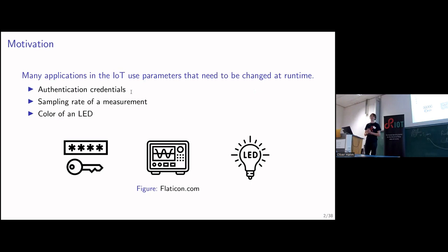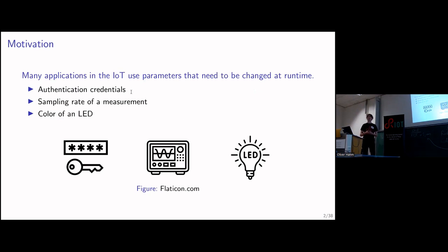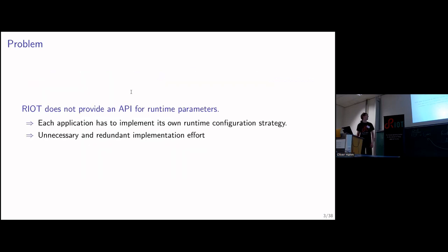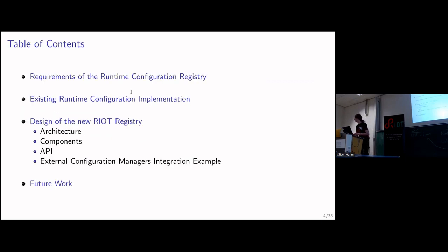Maybe if you have an IoT device, sometimes there are configuration parameters you want to change during the lifetime of that device. You don't always want to reflash your device and do static configuration, but just change them during runtime. Possible examples would be sensor measurement intervals or your smart LED color. The problem is RIOT right now has no solution to this, so if you're going to have a RIOT-based IoT application, you always need to come up with your own solution.